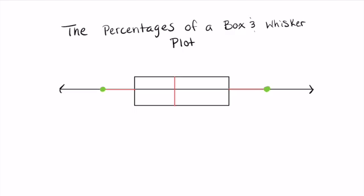We're given all this data of numbers that we put in order. We find the minimum, the maximum, Q1, Q2, Q3, and so forth. Well, between all of those numbers from our minimum to our maximum, that is 100% of my data.